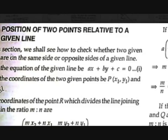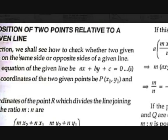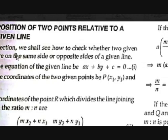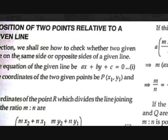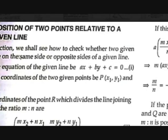Position of 2 points related to a given line. There is a line and there are 2 points, and you should find the position of those 2 points — which side of the given line they are on. First, let's see how to check whether 2 given points are on the same or opposite sides of a given line.